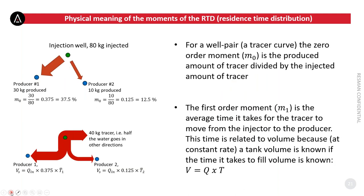To summarize: when you inject a certain amount of tracer into a well, you can use the RTD to find how much comes into each producer. You can use the average time, multiply by the injection rate, then multiply by the fraction going into one specific producer, and find the swept volume between that injector and that particular producer. This gives a full overview of the connections, the importance of each connection, and the swept volume between injectors and producers.